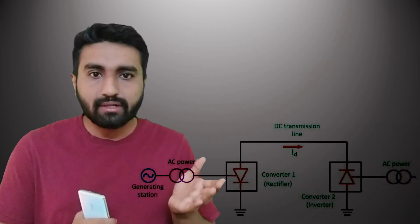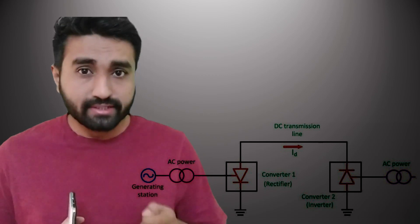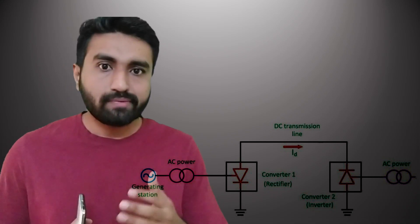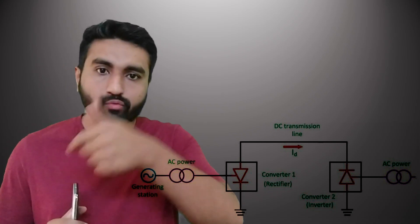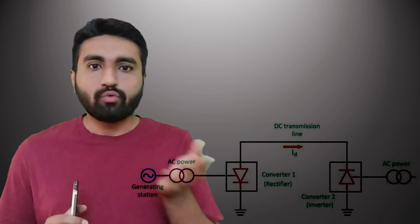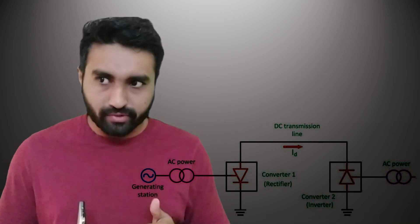Another important application of the rectifier is in HVDC transmission. HVDC transmission has a lot more advantages compared to AC transmission. Our generation is done by AC generators — alternators — so we have AC generation but we want to transmit on a high voltage DC line. The rectifier converts the AC generation into DC, and after that we step up the DC voltage and do the HVDC transmission.